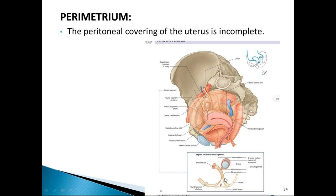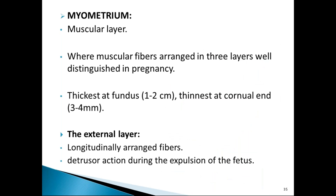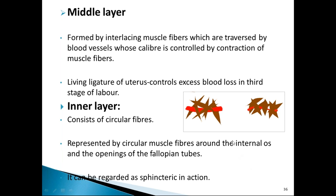The myometrium is the muscle layer of the uterus. Muscles are arranged in three layers: the external layer of longitudinal muscles has a detrusor action during expulsion of the fetus. The middle layer has crisscrossing interlacing muscle fibers traversed by blood vessels — these are called the living ligature of the uterus because they control excess blood loss in the third stage of labor. The inner layer has circular fibers, mainly around the internal os and openings of the fallopian tubes, with a sphincteric action.